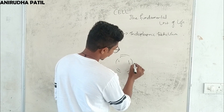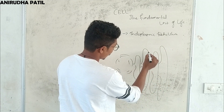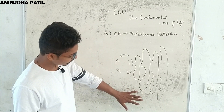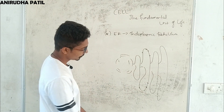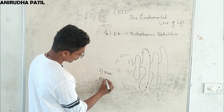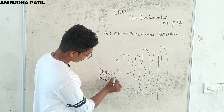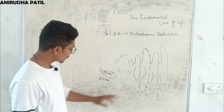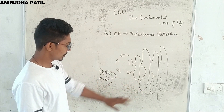The next organelle is the endoplasmic reticulum. It is a network of large tubular-like structures that start from the nucleus and extend outward. There are two types: rough endoplasmic reticulum and smooth endoplasmic reticulum. The rough ER has ribosomes attached to it — you can remember it as 'R for ribosomes.' The smooth ER has no ribosomes.